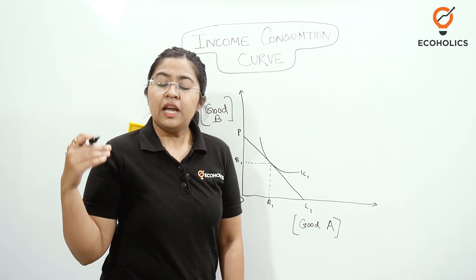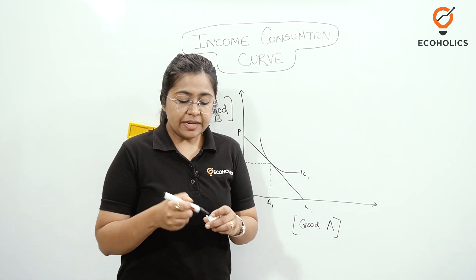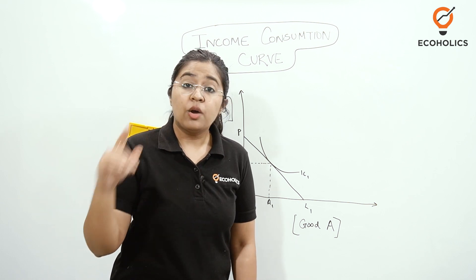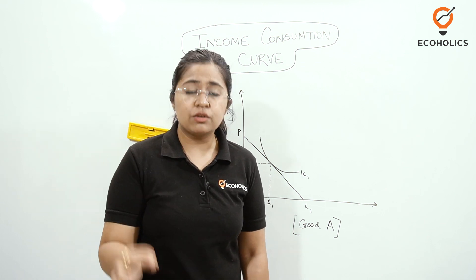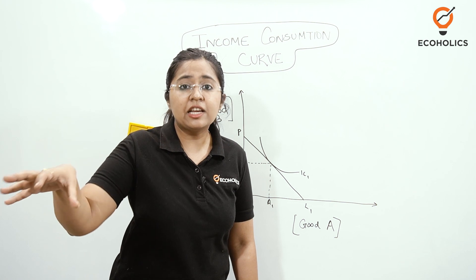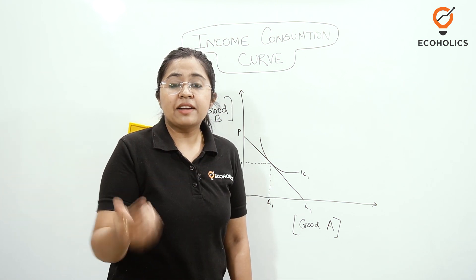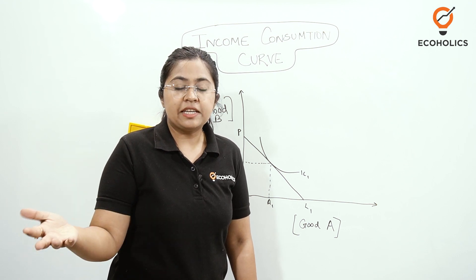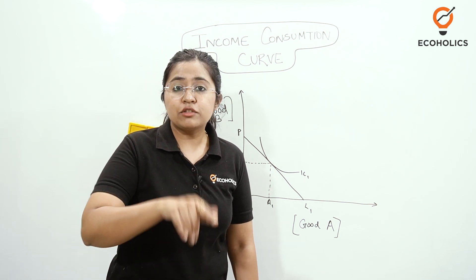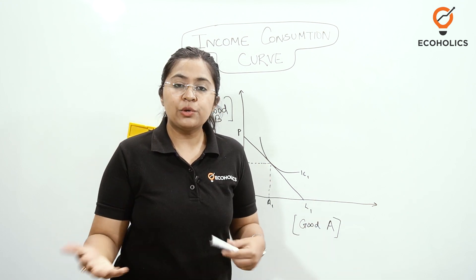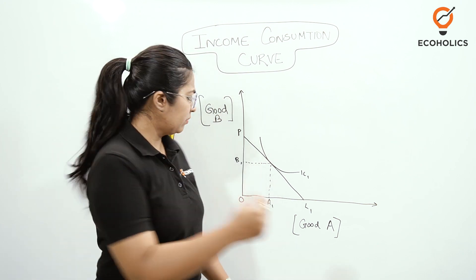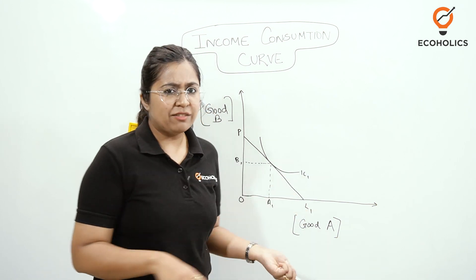The Income Consumption Curve is derived in a scenario where the prices of commodities remain constant while only the income of the individual changes. Because of that change in income, the consumer derives a utility different from the original, and the change in utility or disutility gained or lost due to a change in income is what we call the income effect. Initially the consumer's income was represented by PL1.